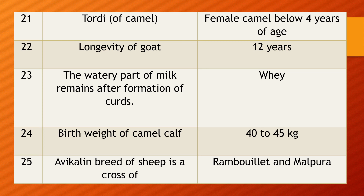Last question. Avikalin breed of sheep is a cross of which breeds of sheep? Important question. Answer: Avikalin is a cross of Rambouillet and Malpura breeds.